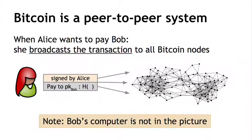To understand how distributed consensus could work in Bitcoin, recall that Bitcoin is a peer-to-peer system. When Alice wants to pay Bob, she broadcasts a transaction to all Bitcoin nodes in the peer-to-peer network. The transaction contains Alice's signature — so other nodes know it came from Alice — Bob's public key serving as his address to receive Bitcoin, and a hash linking this transaction to her prior receipt of the coin, similar to hash pointers from the first lecture.